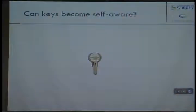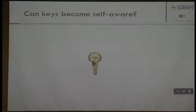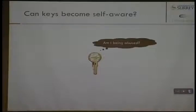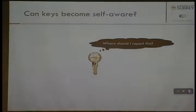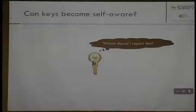The question to ask is: can these keys actually become self-aware? Instead of me looking for keys and asking people, 'do you have the key?', the keys are kind of self-aware of the situation. Can they find out if they are being abused? Can they also find out who's abusing them? And if they know they're being abused, can they report it to someone? That's the idea of the Internet of Things.